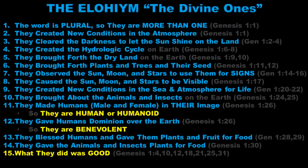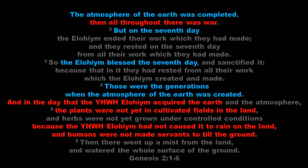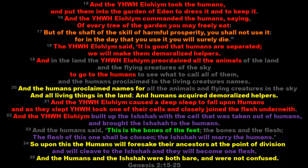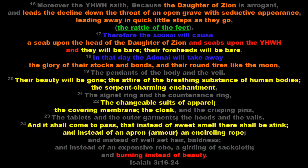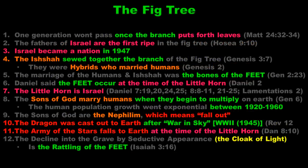In the previous video we looked at Genesis 1, which says the Elohim made the earth habitable for life and brought forth both male and female humans. And Genesis 2, which tells us the Yahweh acquired the earth and created hybrids with a certain cell from the humans, and the hybrids married the humans. In this video we'll look at Genesis 3, which talks about an image technology that the hybrids used to make themselves appear beautiful. We'll also find confirmation in Isaiah 3 and Lamentations 2, and look at the timing of this event according to the Bible.